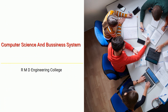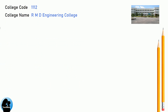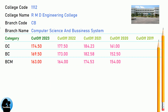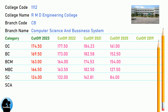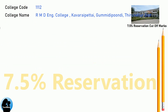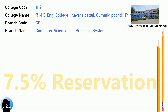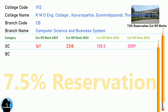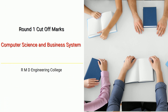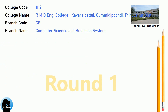DNEA Cut-Off for RMB Engineering College in Computer Science and Business System. DNEA 7.5 Reservation Cut-Off for RMB Engineering College in Computer Science and Business System. DNEA Round 1 Cut-Off for RMB Engineering College in Computer Science and Business System.